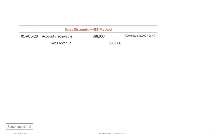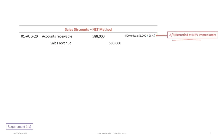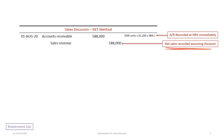We begin with requirement 1 under the net method. The first journal entry on August 1st is to record the sales. We debit accounts receivable and credit sales revenue for 500 units at a price of $1,200, recorded net of the discount. The net method presumes the discount will be taken, so sales and accounts receivable are recorded after the discount, giving us $588,000, effectively at net realizable value.